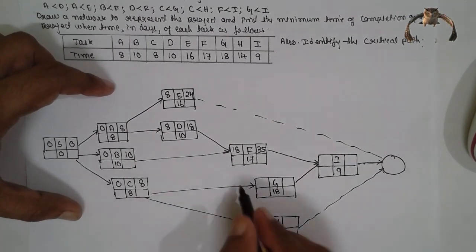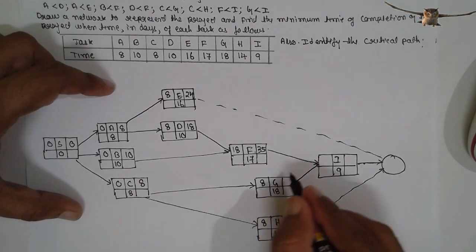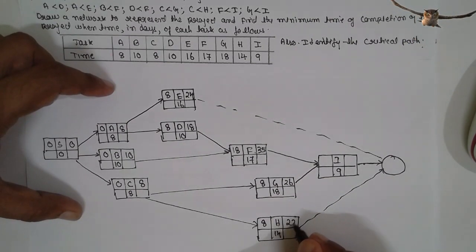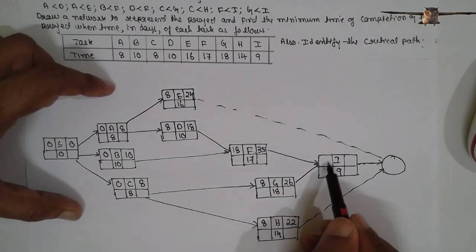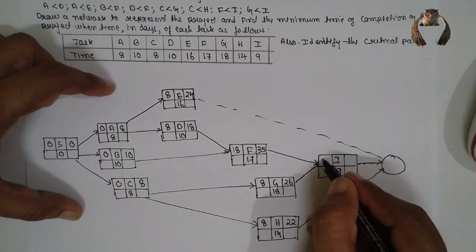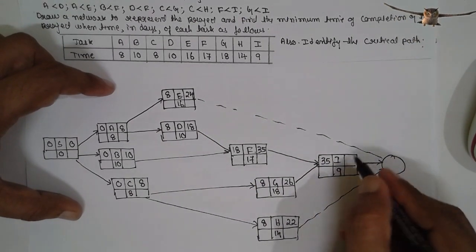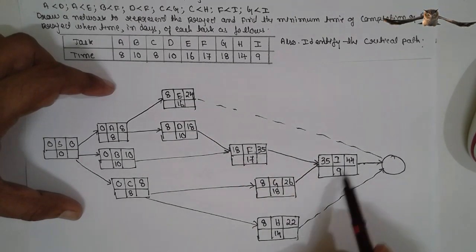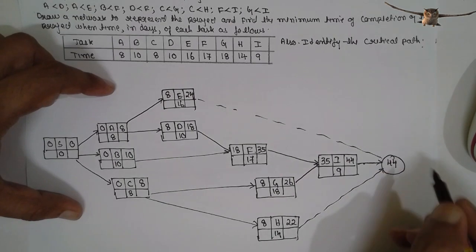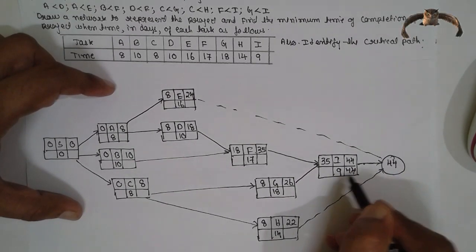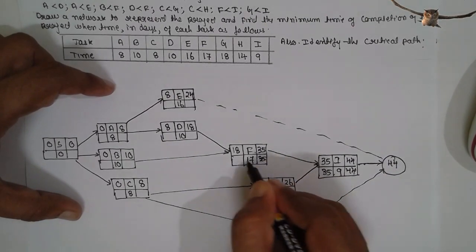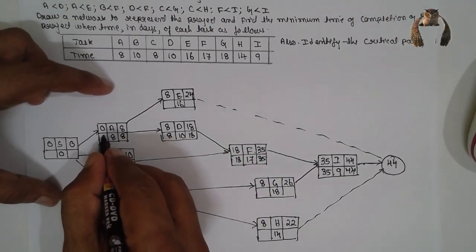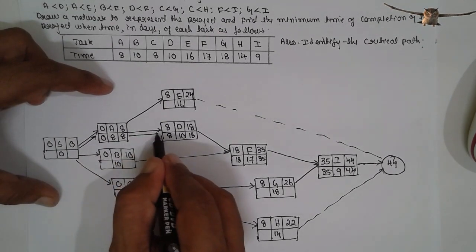At the finish line, write the larger value: 35+9=44. Other paths give 24 and 22, so 44 is the largest — write 44 at finish. Now going backward from 44: 44 is at finish, it becomes 35. 35 minus 17 = 18. Write 18. 18 minus 10 = 8. Write 8. 8 minus 8 = 0. This is your critical path.